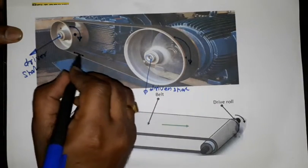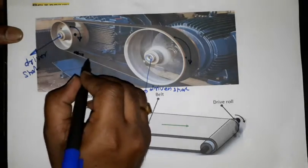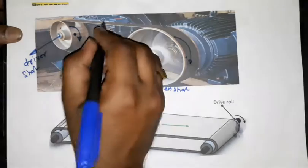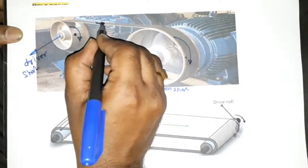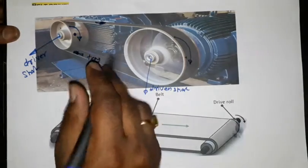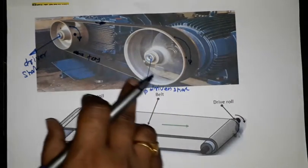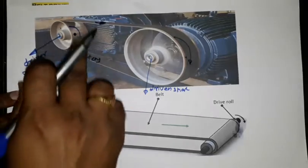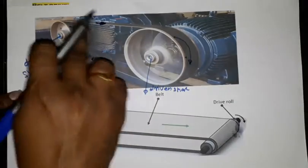Here there will be tension and here there will be compression. This is the tension side and this is the slack side.